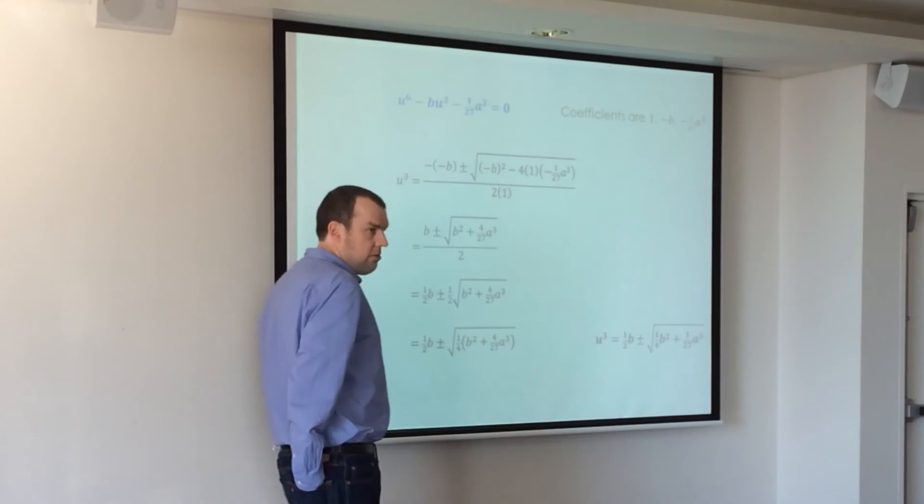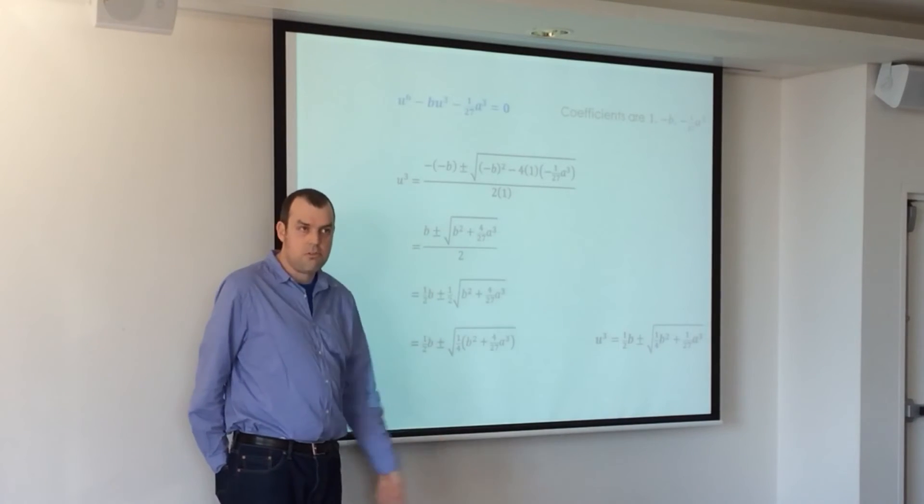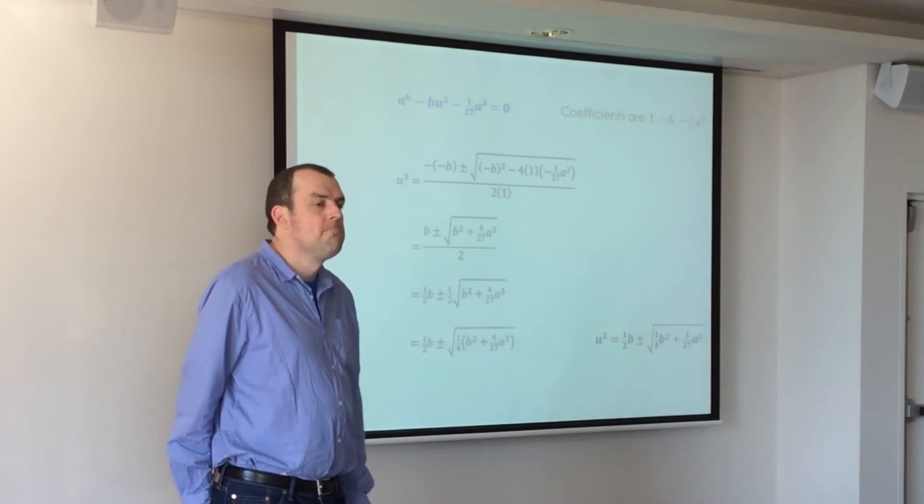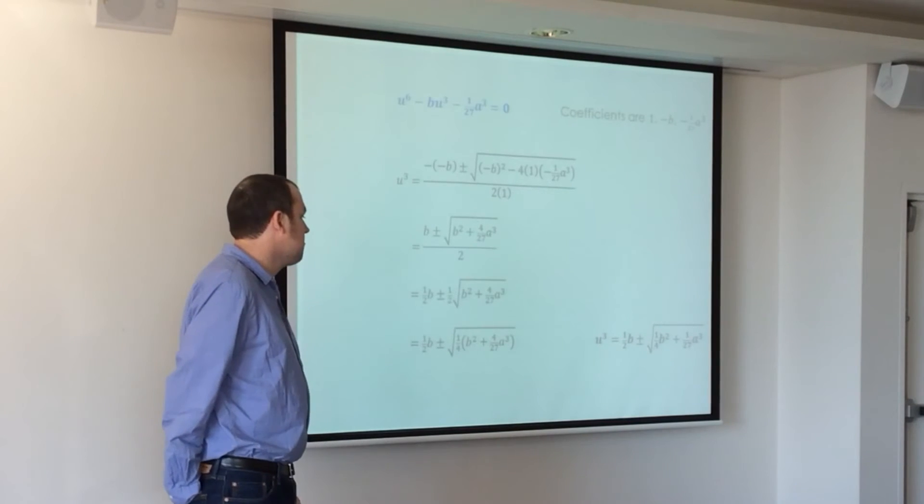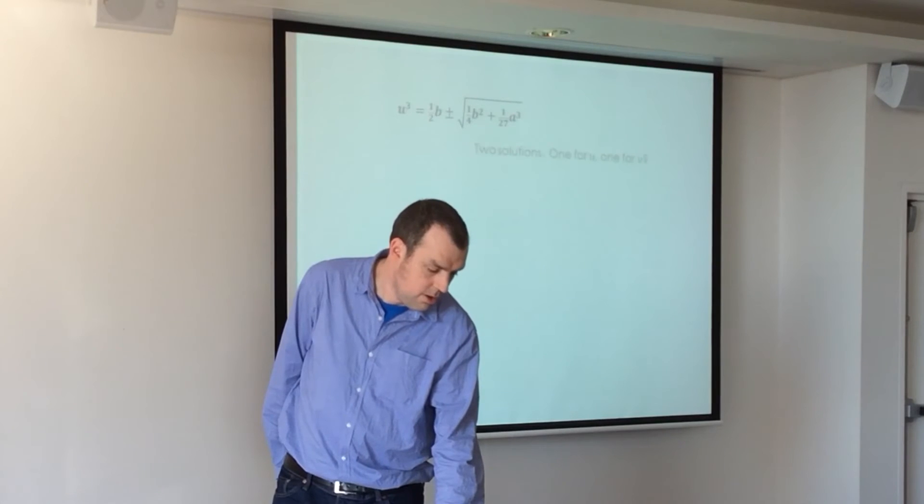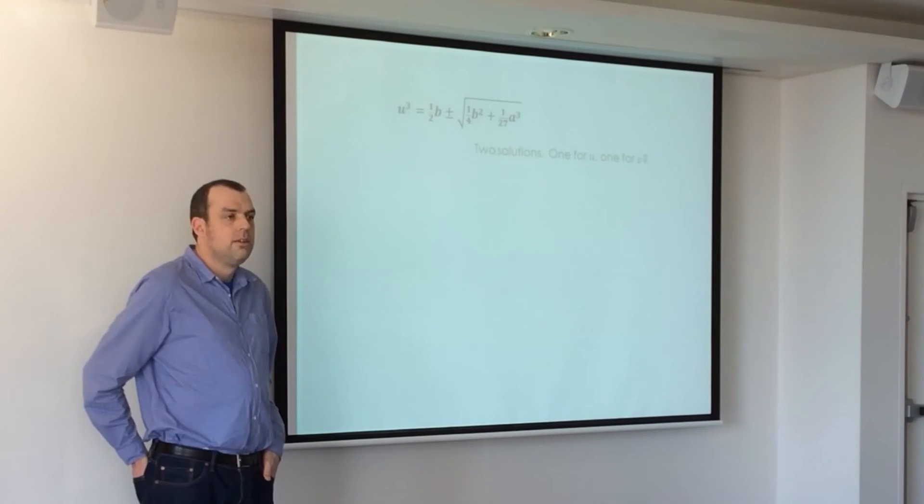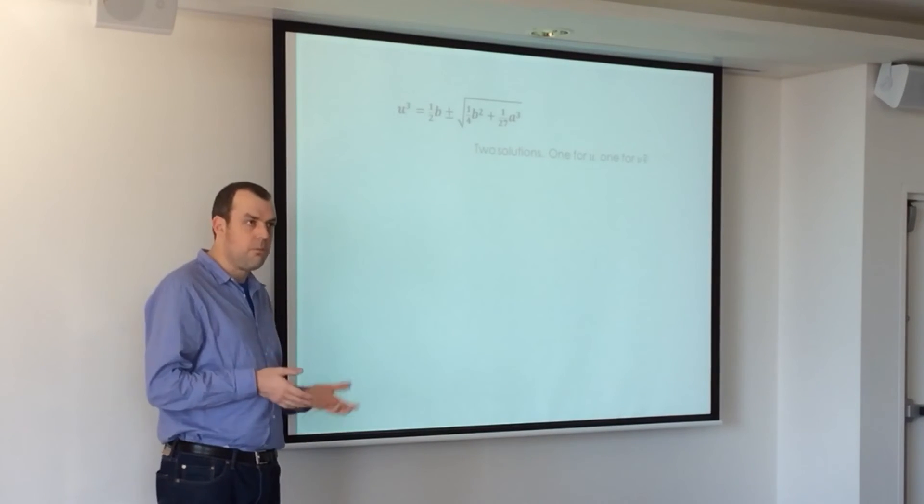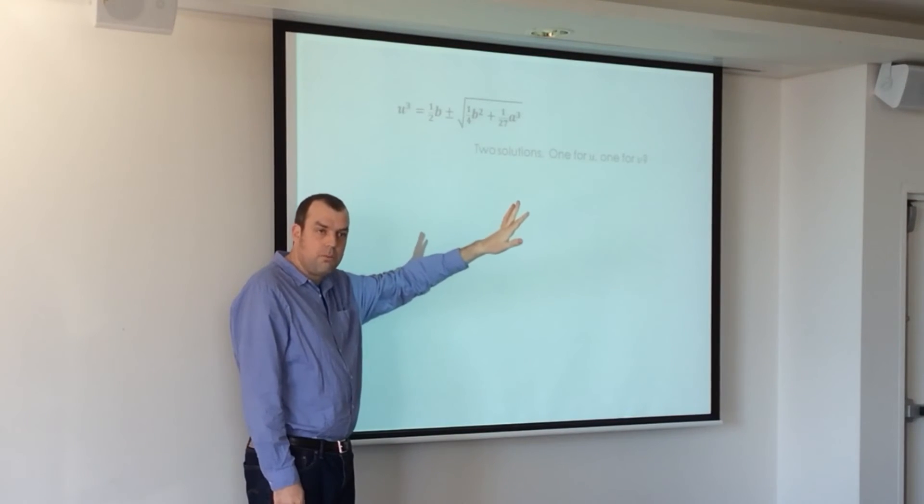So two solutions. This often happens, doesn't it? We derive a quadratic equation. We solve it. We have two solutions. And we go, all right, what are we going to choose? Any thoughts? Okay. Two solutions. We need one for u and one for v, don't we? All right, we've been working with u, but x equals u plus v. We need something for u and something for v. So it would be kind of nice if we could just say, let the positive one be u and let the negative one be v.